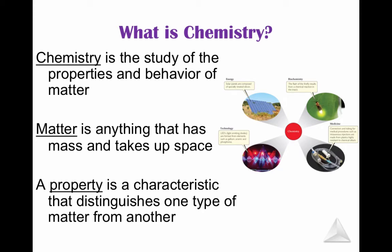So just a review — what is chemistry? Chemistry is the study of properties and behavior of matter. It's all about matter, its properties, its changes. Matter is anything that has mass and takes up space — it has to have mass, it has to have volume. A property is a characteristic that distinguishes one type of matter from another. We're going to look at the different types of properties in chemistry.